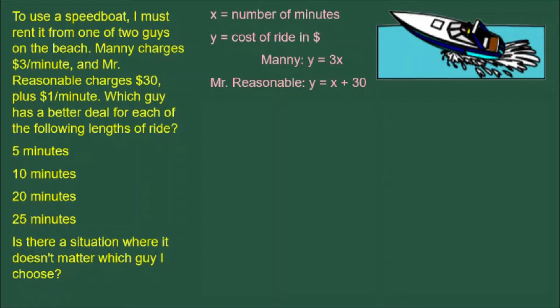For Manny, the equation is in the form Y equals AX — specifically Y equals 3X, with the 3 being the $3 per minute. For Mr. Reasonable, the equation is in the form Y equals AX plus B, where B is the $30 charge and A equals 1, because he charges $1 per minute on top of the $30 charge. So his equation is Y equals X plus 30.